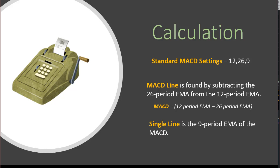The second line in the MACD indicator is just a 9-period exponential moving average. There are folks that change those numbers around, but just keep in mind: you always subtract the second number from the first, and that makes the MACD line. The 9 is what they call the signal line — not the single line, the signal line.